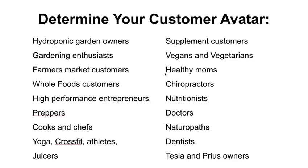Where can I find people who actively spend money on their health and fitness, buy organic produce, have gardens, or already own a competing hydroponic food system? Let's list some potential niches: hydroponic garden owners, gardening enthusiasts, farmers market customers, Whole Foods customers, high-performance entrepreneurs — the biohacking Dave Asprey and Tim Ferriss crowd — preppers, cooks and chefs, CrossFit athletes, juicers, chiropractors, nutritionists, doctors, vegans, supplement customers, naturopaths, and dentists.